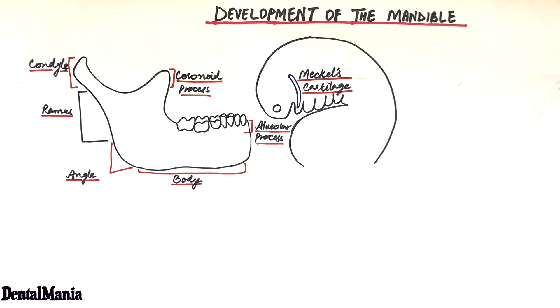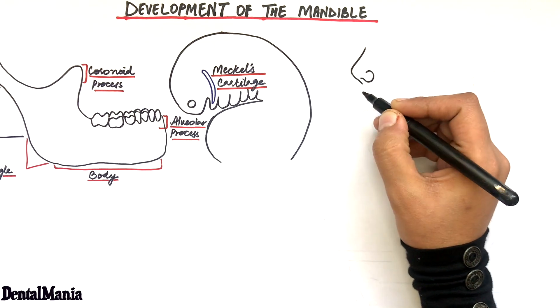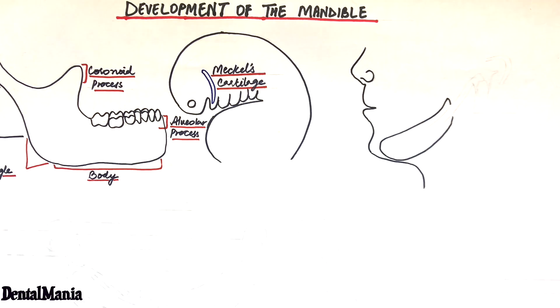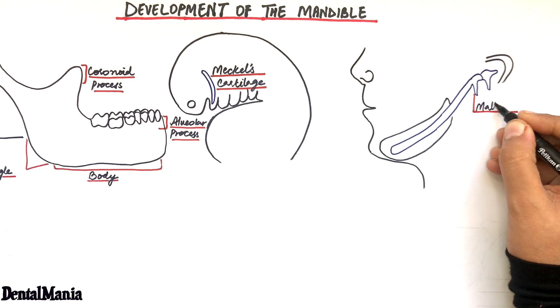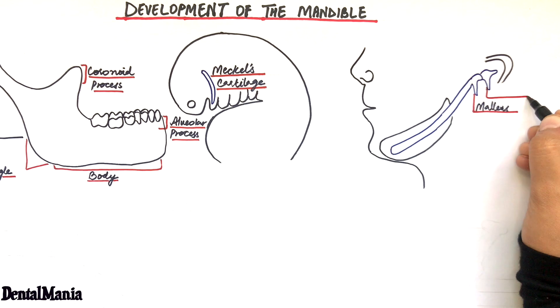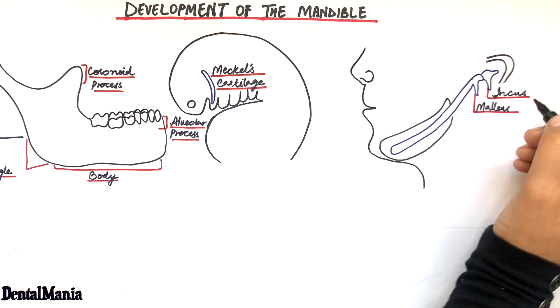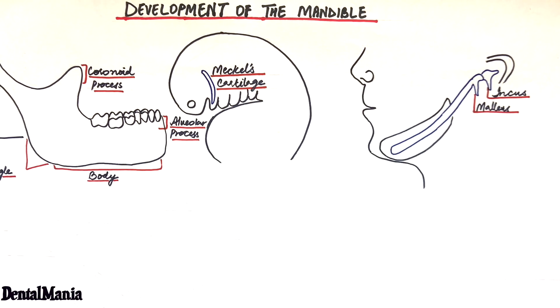The Meckel's cartilage plays no part in the development of the mandible. Instead, it provides a framework and delimits the region where bone formation would take place. The cartilage extends as a solid unbroken rod of hyaline cartilage with its proximal ends connected with the ear capsules and its distal extremity is joined with its anatomic counterpart through a mesodermal tissue.